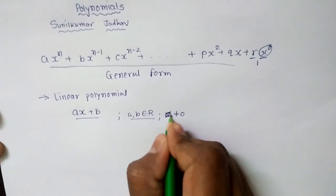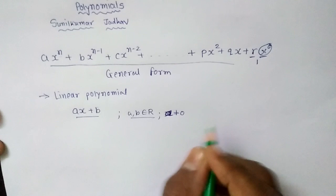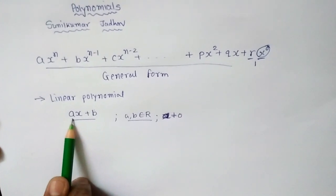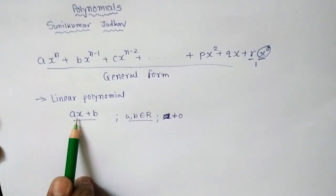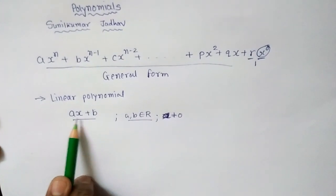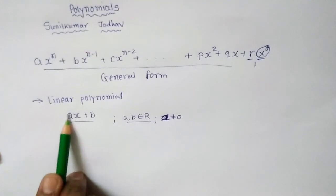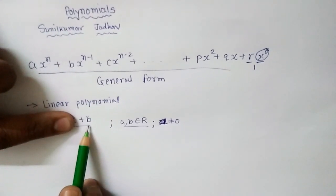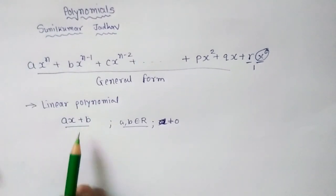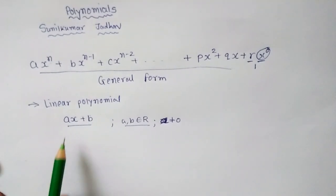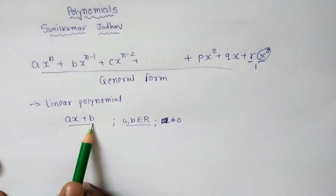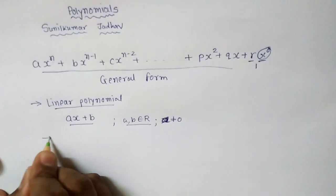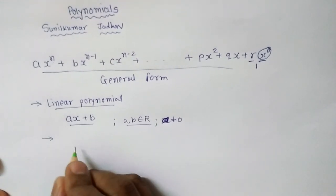Additionally, the condition is that a is not equal to 0. If a were equal to 0, then 0 into x would equal 0, leaving only the constant term, and it would no longer remain a polynomial of degree 1. So ax plus b is a linear polynomial, with the condition that a is not equal to 0.